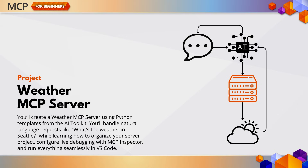Now that your agent can use external tools, it's time to level up. Module 3 gets into the nitty-gritty of custom MCP server development. You'll build your own MCP server from scratch using the AI Toolkit's Python templates. Your project? A weather MCP server that responds to natural language questions like, what's the weather in Seattle? You'll use the latest MCP SDK, configure advanced debugging with MCP Inspector, and run your server live alongside your agent inside VS Code.